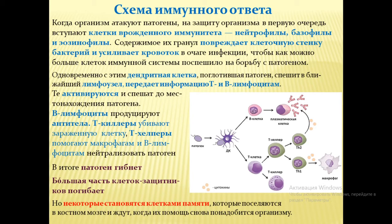Рассмотрим схему иммунного ответа. Когда в организм попадают патогены и антигены, на защиту прежде всего выступают клетки врождённого иммунитета — клетки фагоцитарной активности: нейтрофилы, базофилы, которые выделяют содержимое своих гранул, повреждающее клеточную стенку бактерий. Также эти клетки усиливают кровоток посредством воспалительной реакции в очаге инфекции, чтобы привлечь больше клеток иммунной системы.